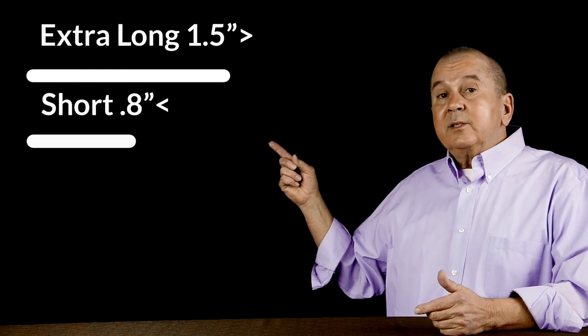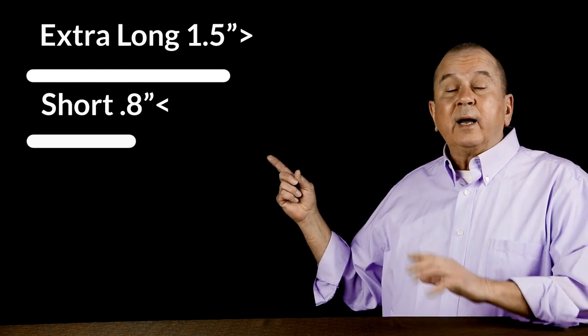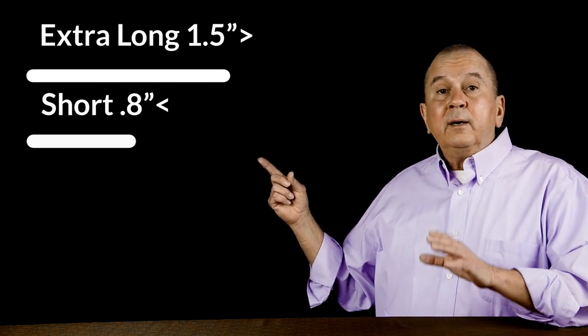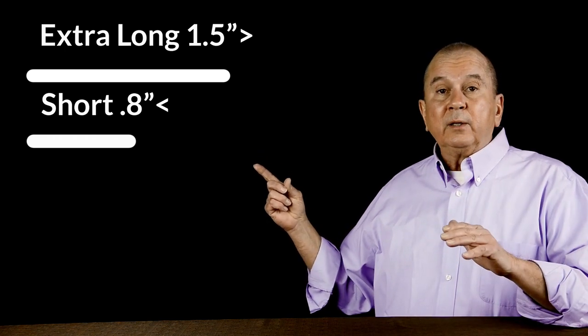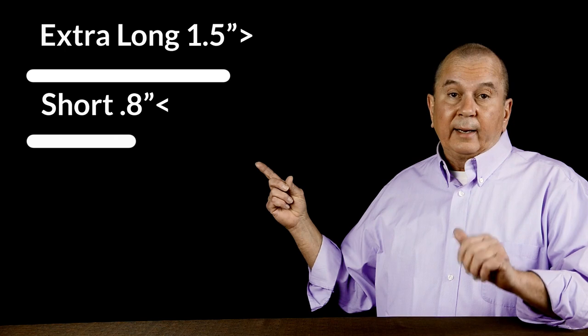With regard to bed sheets, pilling can appear or develop as a result of a number of different factors. First of all, cotton quality. The cotton quality that you find in very inexpensive sheets is very low. Cotton is graded and sorted based on a number of criteria, but one of the factors that contributes most to pilling is fiber length.